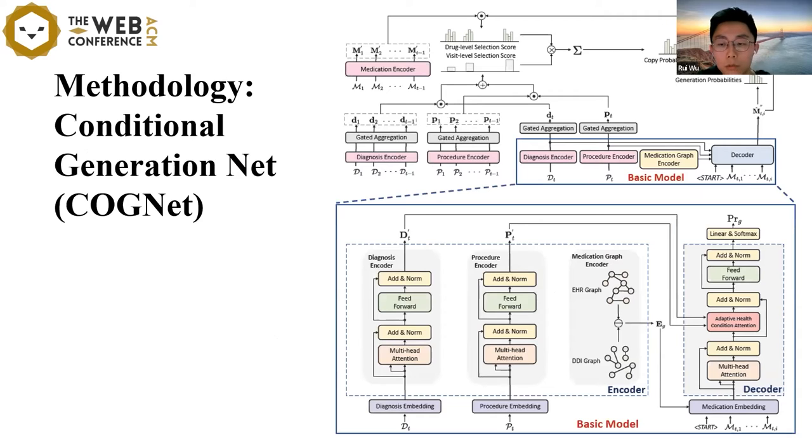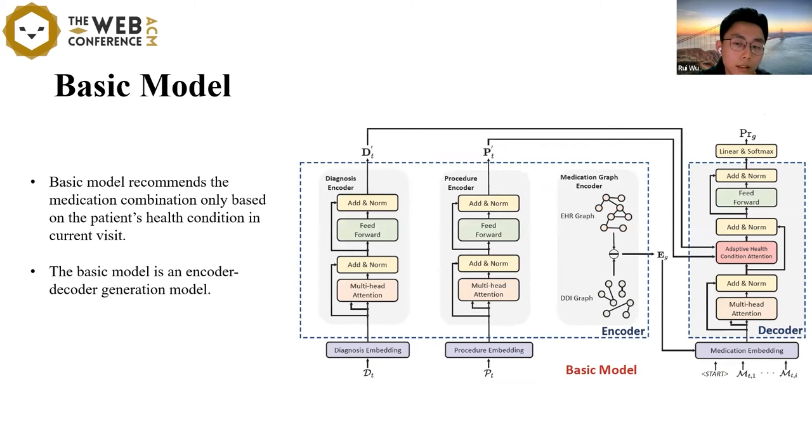In this paper, we propose an encoder-decoder-based generation network to produce the appropriate medications in a sequential manner, named COGNet, abbreviated from Conditional Generation Net. The proposed model consists of the basic model and the copy model. The lower part of this figure is the framework of the basic model, and the upper part is the overall framework with the copy model added. First, let me talk about the basic model.